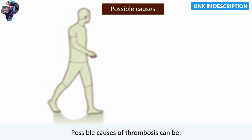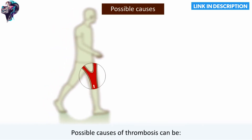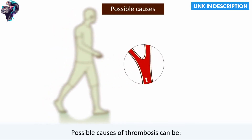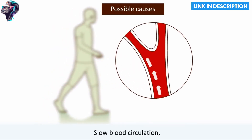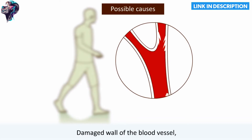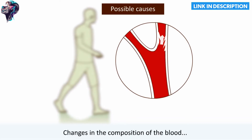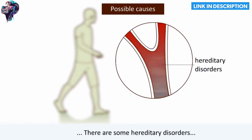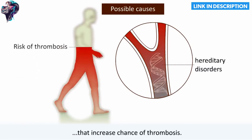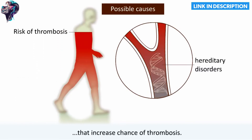Possible causes of thrombosis can be slow blood circulation, a damaged wall of the blood vessel, and changes in the composition of the blood. There are also some hereditary disorders that increase the chance of thrombosis.